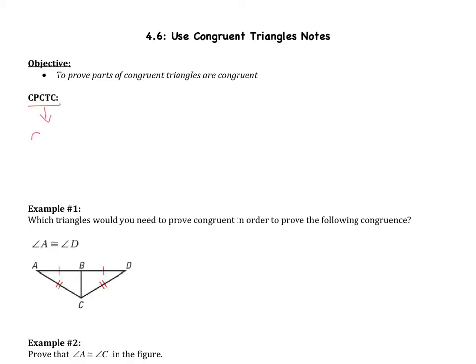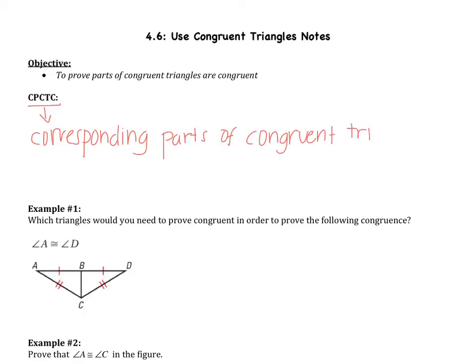This theorem tells us that corresponding parts of congruent triangles are congruent. The theorem says exactly what it's called — that is actually the name of the theorem. So you're going to have to remember that. It tells us if you have two congruent triangles, all of their corresponding parts are congruent — all of their angles are congruent, all of their sides are congruent.